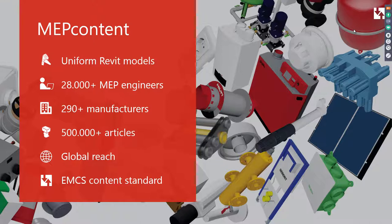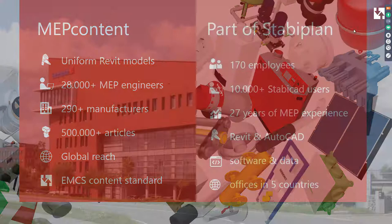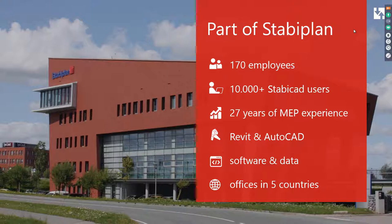The quality of our content is guaranteed by our own standard, the EMCS, which ensures content has the right data and is usable in all projects. MEP Content is part of Stabiplan, a company based in Bodegraven, the Netherlands, with about 170 employees. Stabiplan's main product is StabiCat, a design tool for the MEP industry based on AutoCAD. We have 27 years of experience offering tools based on software and data to help engineers design better projects.